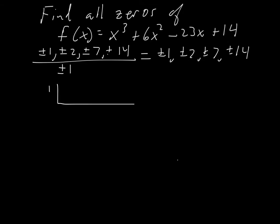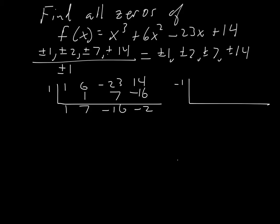Testing x=1 with synthetic division on coefficients 1, 6, −23, 14: the remainder is −2, not zero. So x=1 is not a zero. Testing x=−1 with the same coefficients: the remainder is 42, not zero either.